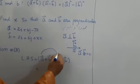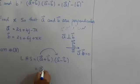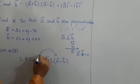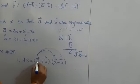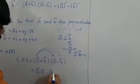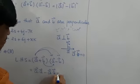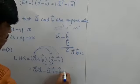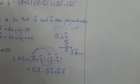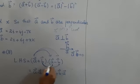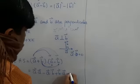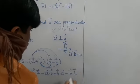We have A·A vector, then plus into minus A·B vector, then plus B·A vector, then plus or minus B·B.